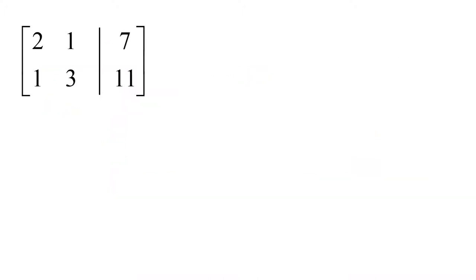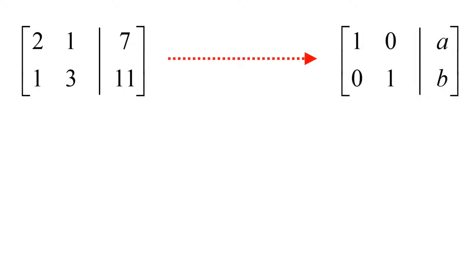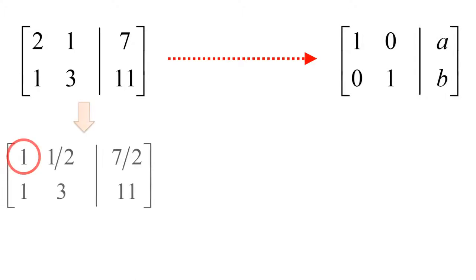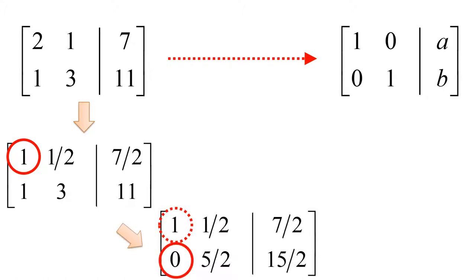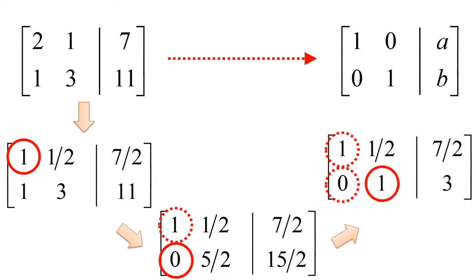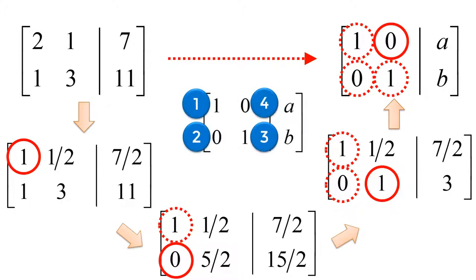Let's start with the augmented matrix. My ultimate goal is to reach the reduced row echelon form. My first step is to make the element in the first row and first column equal to 1 using elementary row operations. Next, make the element in the second row and first column 0. Then make the element in the second row and second column 1. Lastly, make the element in the first row and second column 0. The sequence we reduce rows follows a counterclockwise direction from 1 to 4.